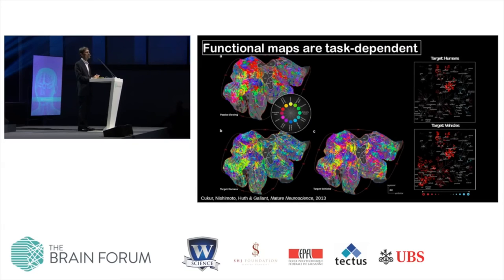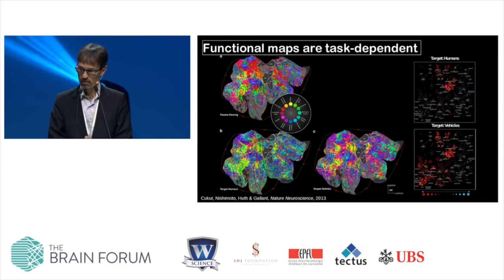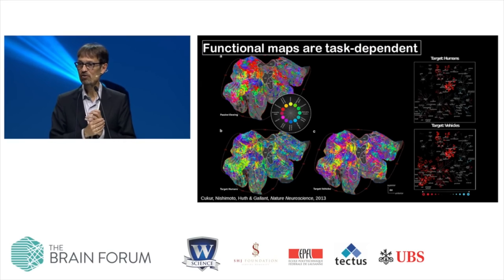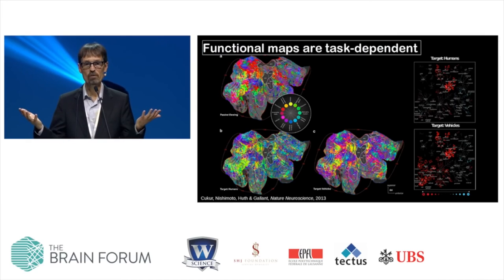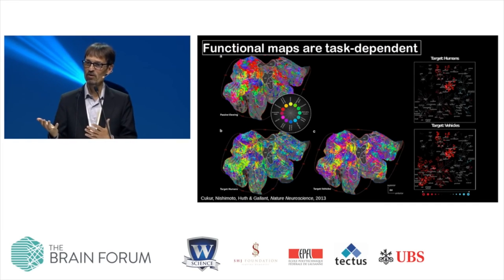One interesting thing about these functional areas is that they are plastic — they depend on the task. We've known this from animal experiments, but it becomes very obvious in MRI. A semantic map from people watching movies differs dramatically from maps when people are searching for humans or searching for vehicles. The semantic representations change dramatically when you change the task, because the brain, being a relatively plastic self-organizing system, organizes to optimize task performance dynamically. If you've lost your cat and go looking for it, your brain becomes a giant cat detector — every part of your brain tries to become the best cat detector it can, and collectively this improves your ability to detect cats.